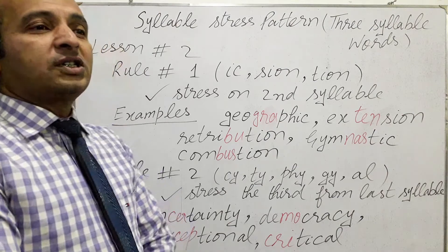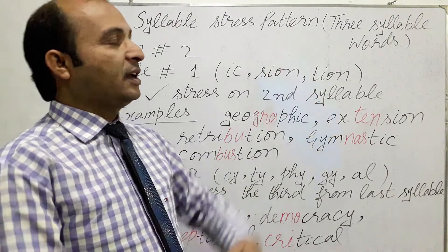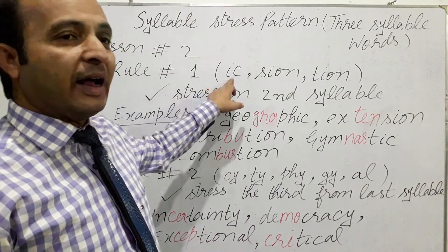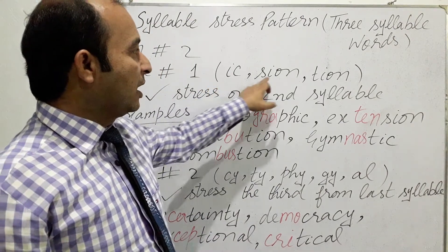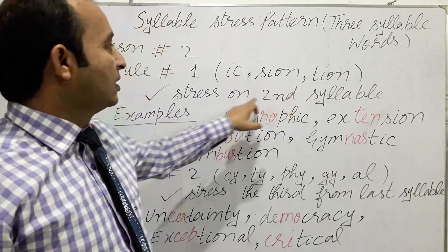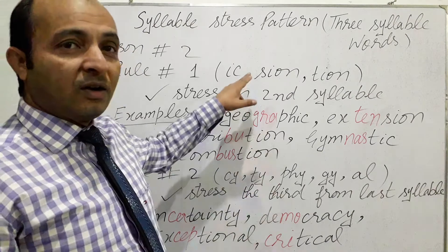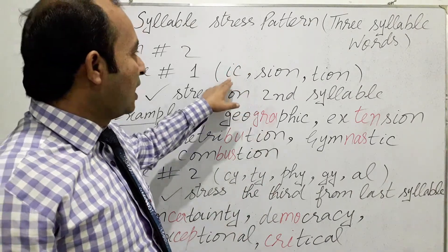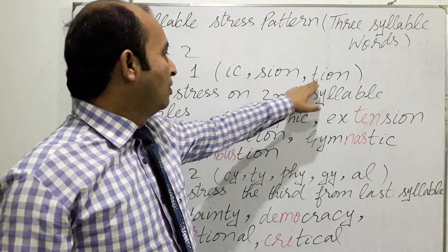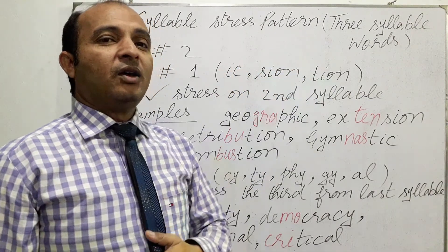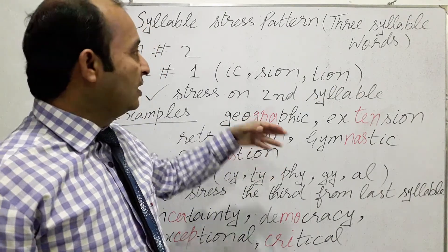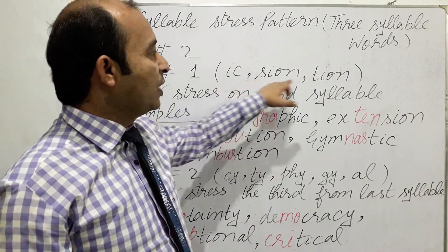We have two rules as far as three syllable words are concerned. The first rule is when a word ends with -ic, -sion, and -tion, we stress the second syllable. We have a few examples of words which end with -ic, -sion, and -tion.